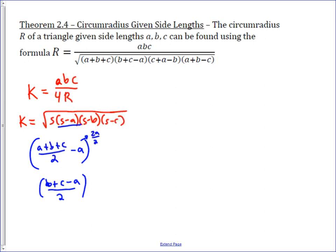We can do that for all of them. If we're subtracting A from the semi-perimeter, we get (B + C - A) / 2. If we're subtracting B from the semi-perimeter, we get (A + C - B) / 2. If we're subtracting C from the semi-perimeter, we get (A + B - C) / 2. That allows us to rewrite our formulas.